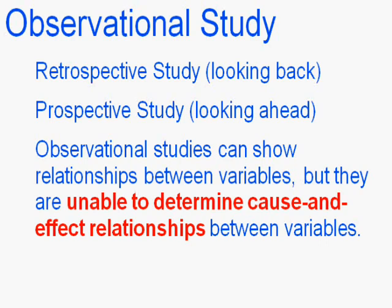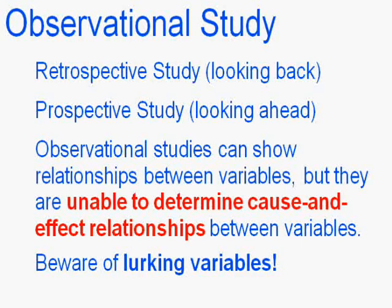Observational studies can show relationships between variables, associations, and correlation, but they cannot show causation. They are unable to determine cause-and-effect relationships. When doing an observational study, you must be aware of the lurking variable — the variable that, when we look at an explanatory and response variable and assume a cause-and-effect relationship, is actually causing what we think is the explanatory variable.